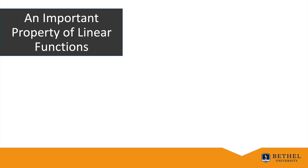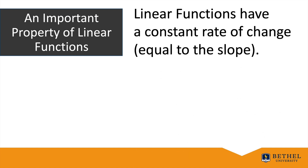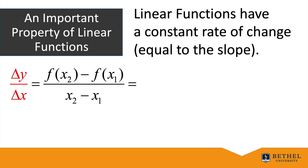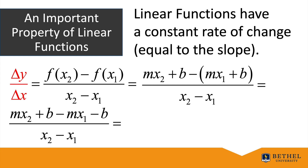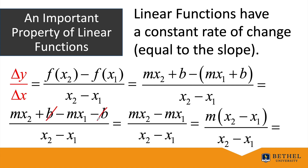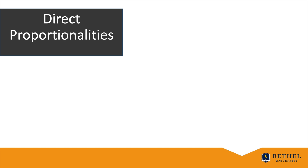We assumed linear functions had a constant rate of change to derive their formulas — we should also verify the reverse. What is Δy/Δx? It equals [f(x₂) − f(x₁)]/(x₂ − x₁). Using f(x) = mx + b and substituting, we distribute the minus sign, cancel the b's, factor out m, and cancel (x₂ − x₁) in numerator and denominator, simplifying to the slope m. This is true for any distinct x₁ and x₂.